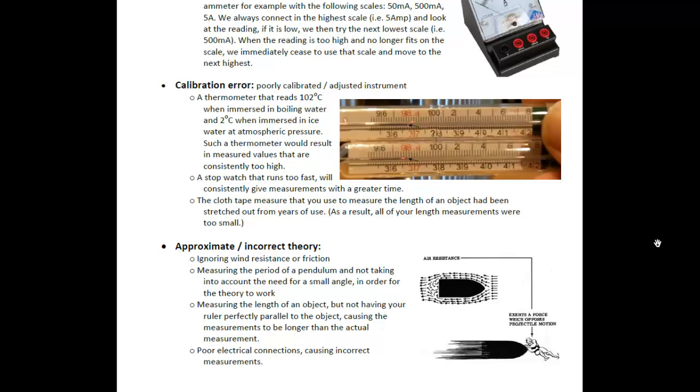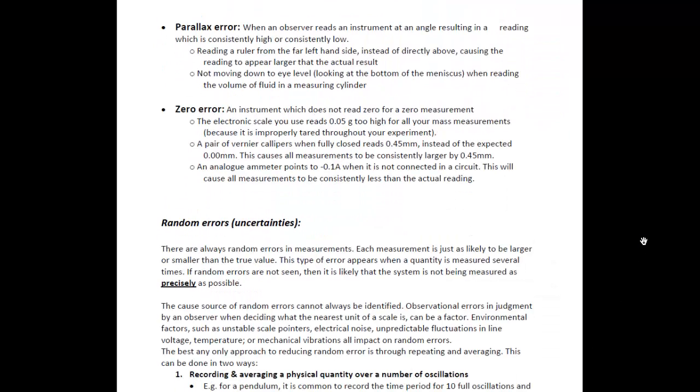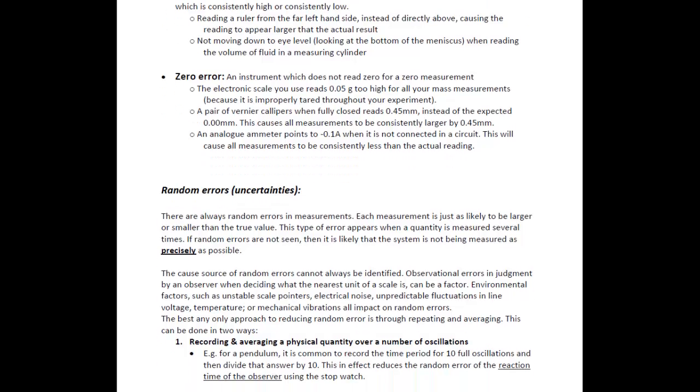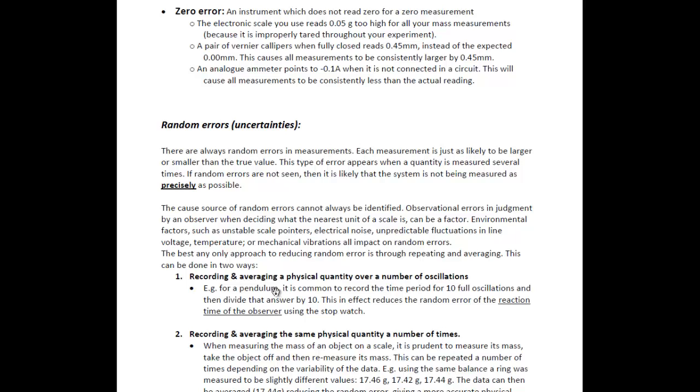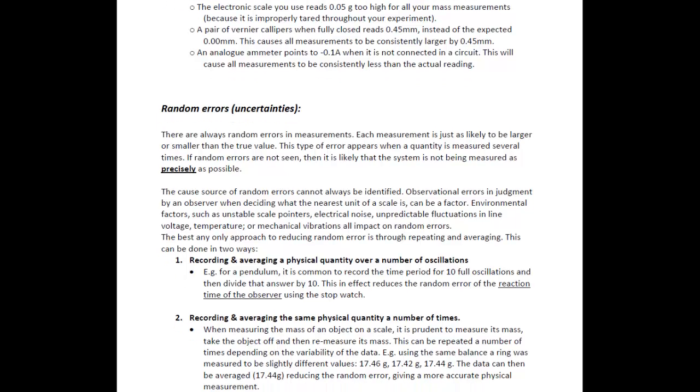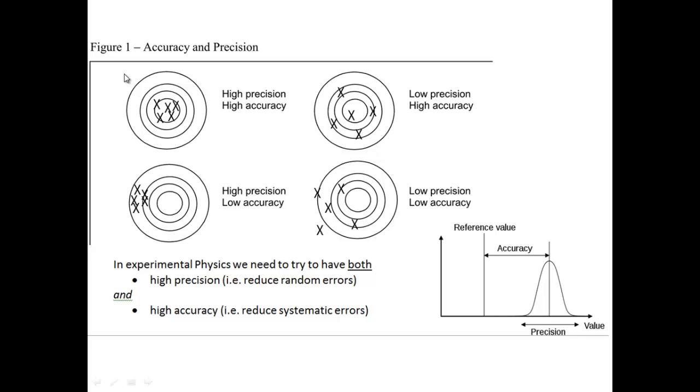If you don't have this worksheet, feel free to pause the video and have a look at it. Something we don't take into account so often is approximate theory - we negate friction or other physics principles like poor connections. Something really important in physics is to repeat and average. For a pendulum, it's common to record for 10 oscillations and then divide by 10, which reduces the reaction time percentage error. In physics we're looking for high accuracy and high precision.